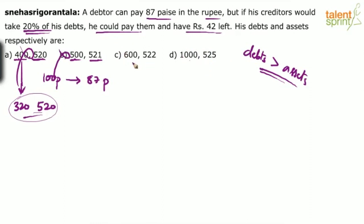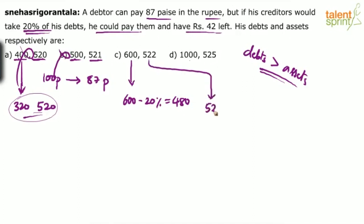Now, how do you find the correct answer? Reduce the debt by 20%. For option C: 600 minus 20% equals 480. His assets are 522. And 522 can be split as 480 plus 42 — he will pay 480 to his creditors and 42 will be left with him. This satisfies the given conditions, so option C is the answer.